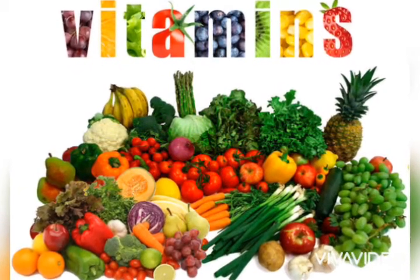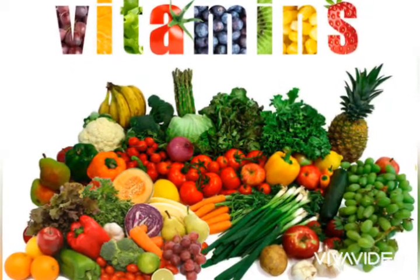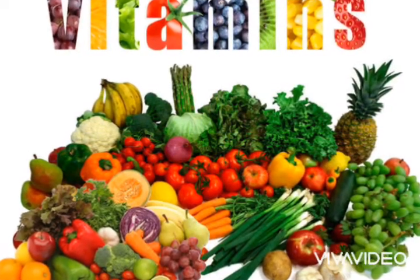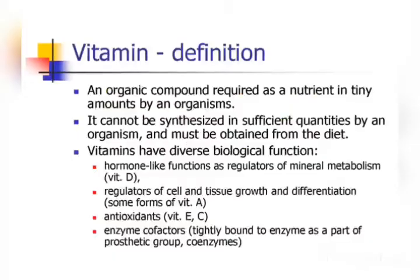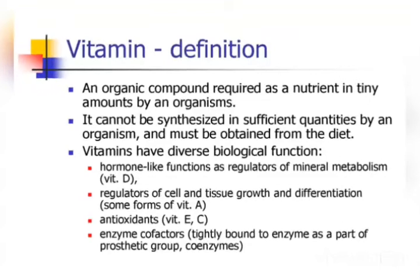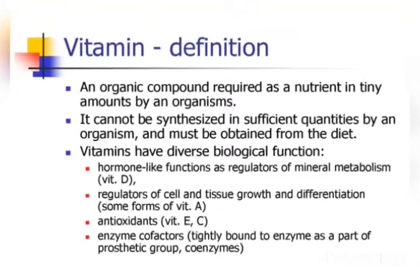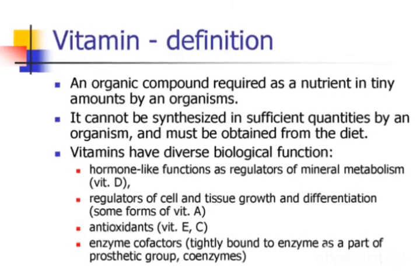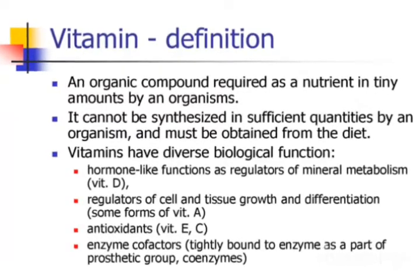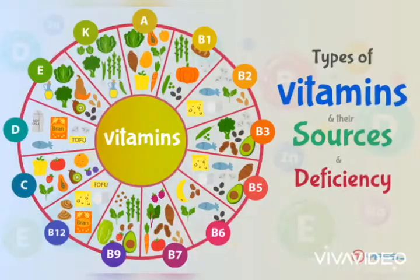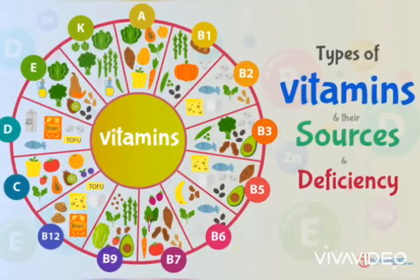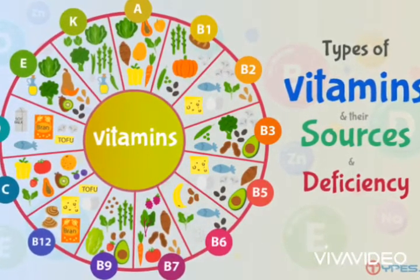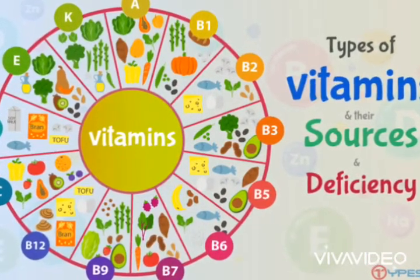The third nutrient is vitamins. Vitamins fight diseases in our body. An organic compound required as a nutrient in tiny amounts by an organism is called a vitamin. Now we are going to learn about the types of vitamins: A, B1, B2, B3, B5, B6, B7, B9,